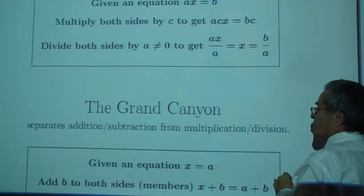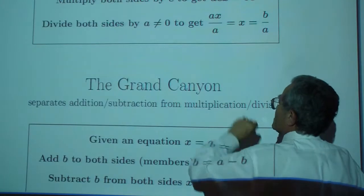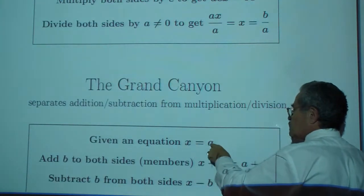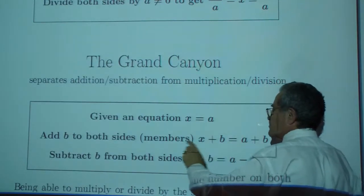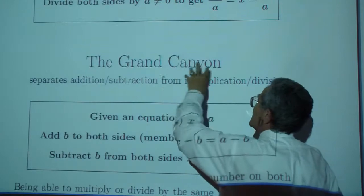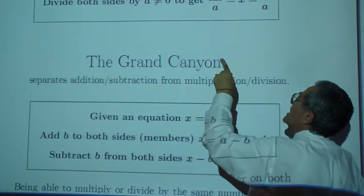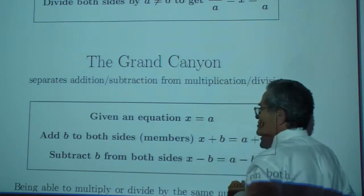Now, be careful. Given an equation X equals A, we can add B to both sides or subtract B from both sides. But there is a grand canyon between multiplication and division versus addition and subtraction.